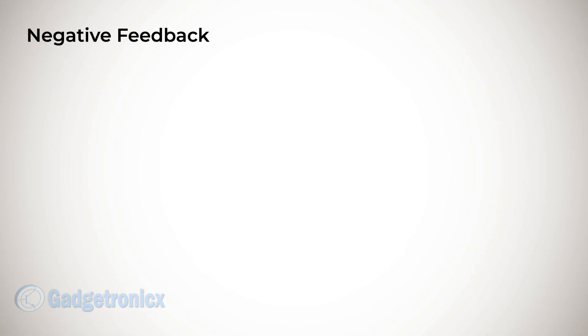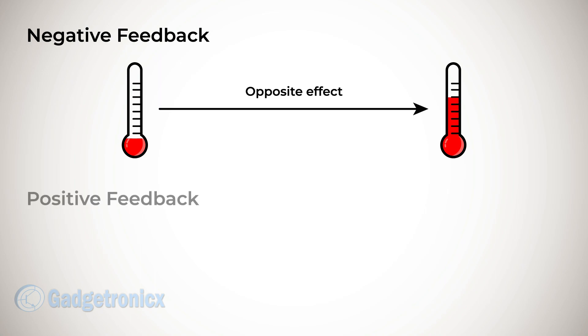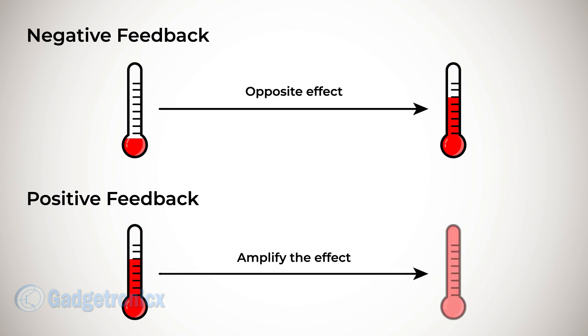This is an example of negative feedback since the reduction in body temperature is fed back to achieve the opposite effect, i.e. an increase in body temperature. If it were a positive feedback, the reduction in body temperature will result in further reduction of body temperature, thus amplifying the temperature loss.